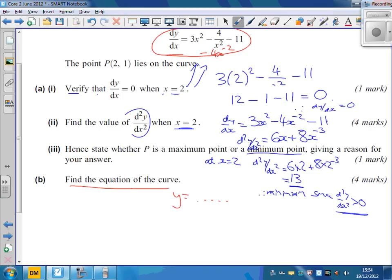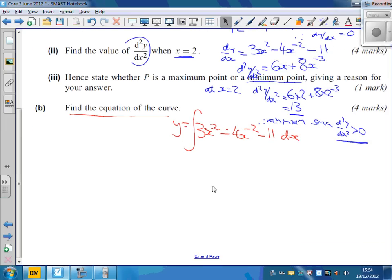So we've got to integrate this thing. y equals the integral of 3x squared minus 4x to the power of minus 2 minus 11 with respect to x. Integrating this then - this time the power goes up by 1. So the power goes up to x to the power of 3. We're going to divide by 3 as well, so those 3s cancel. x to the power of minus 2 goes up to minus 1. We're going to divide by minus 1 as well, so that becomes a plus. 11 is going to go to 11x. But don't forget your plus c on the end. So there's our y equals.